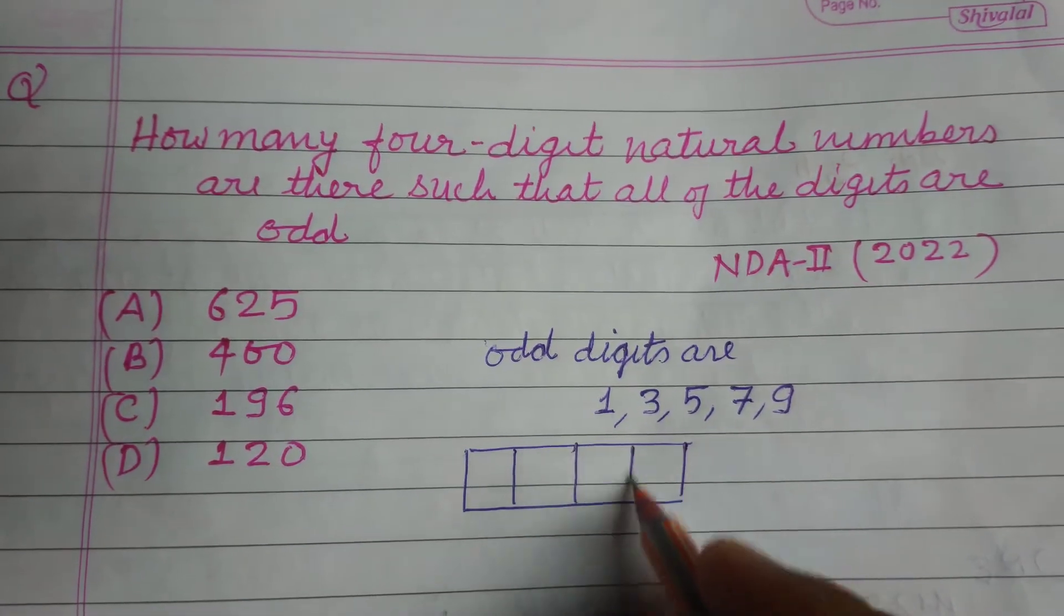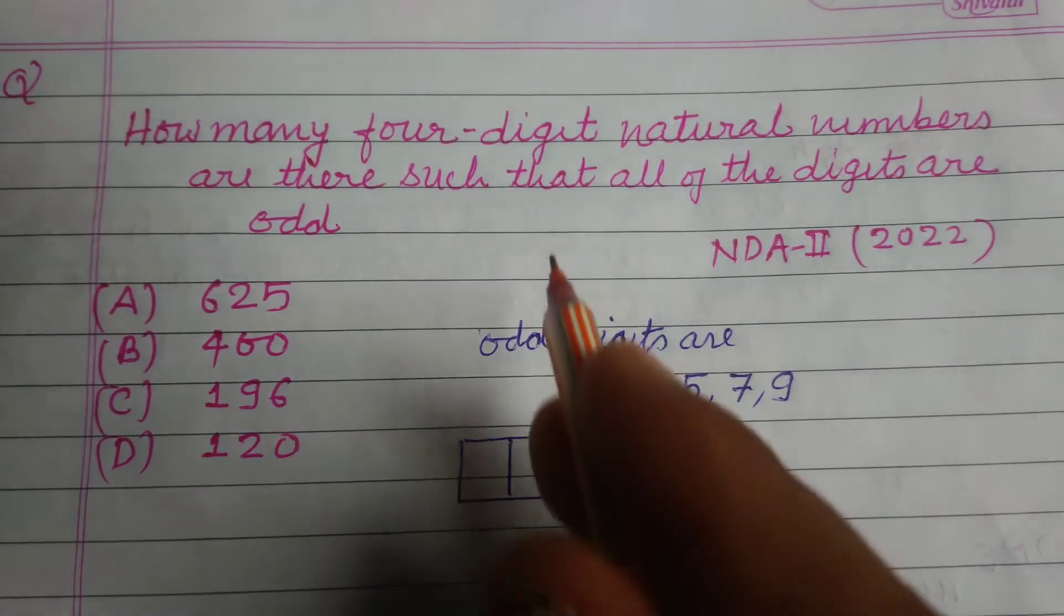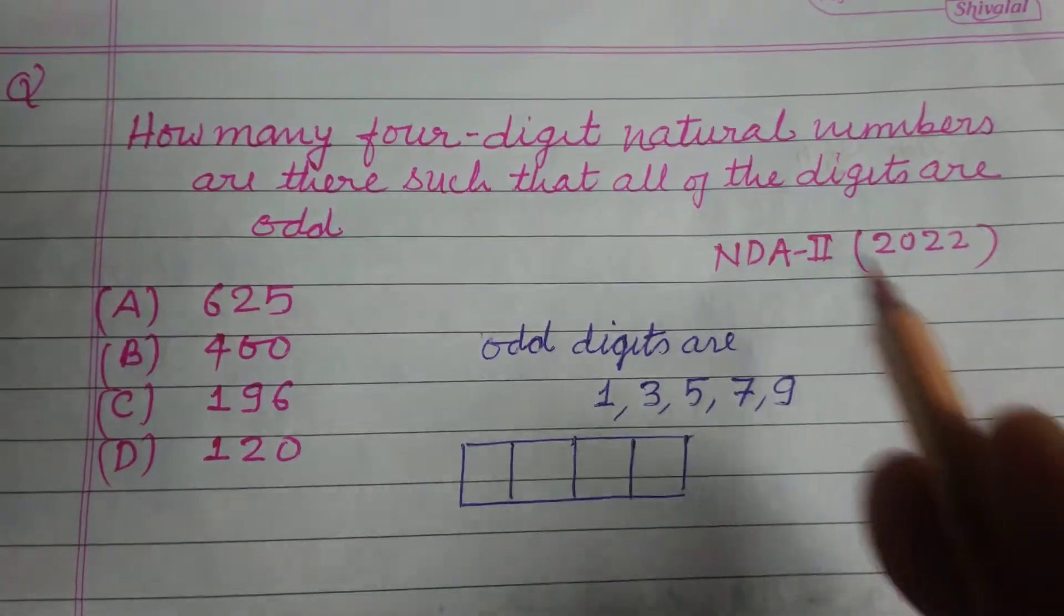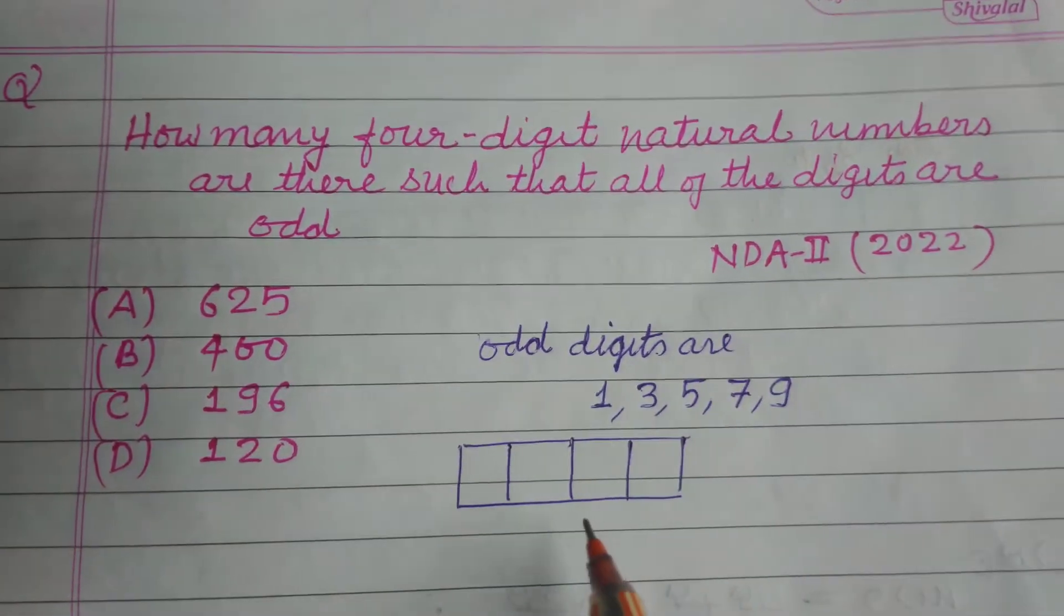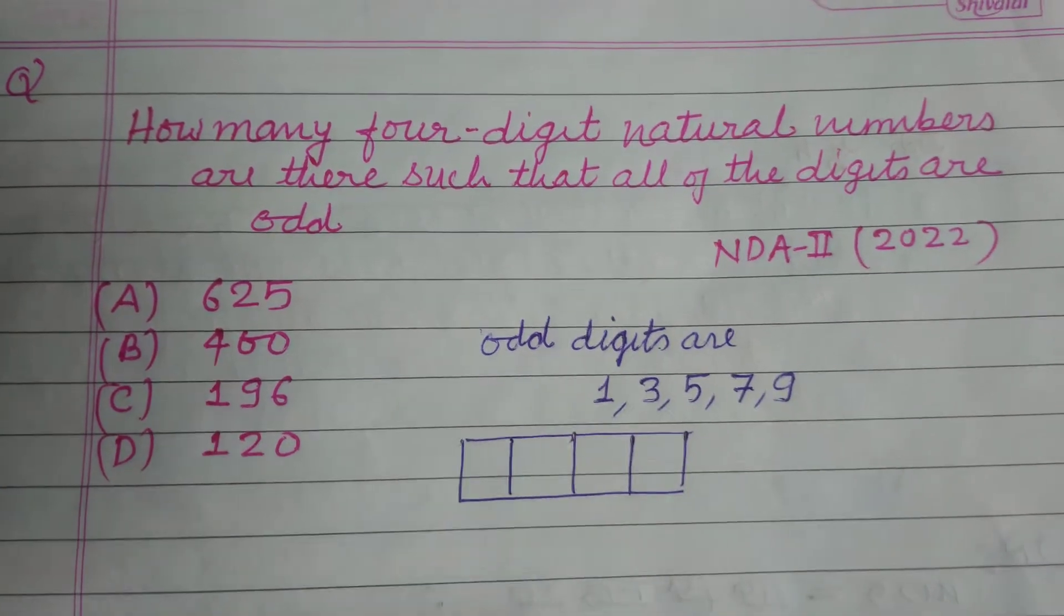One, two, three, four - a four-digit number. But here it is not given that repetition is allowed or not allowed, so we take that repetition is allowed.